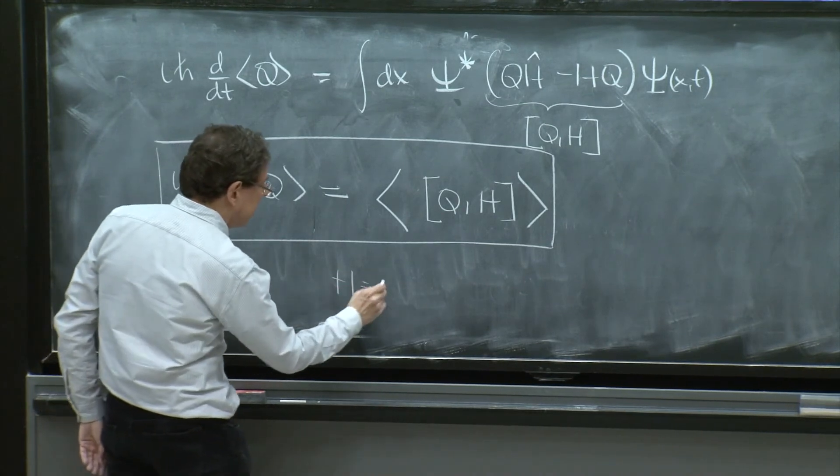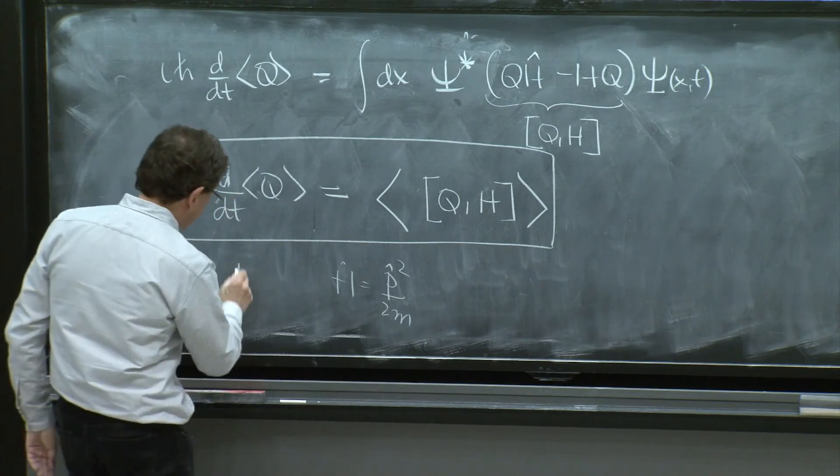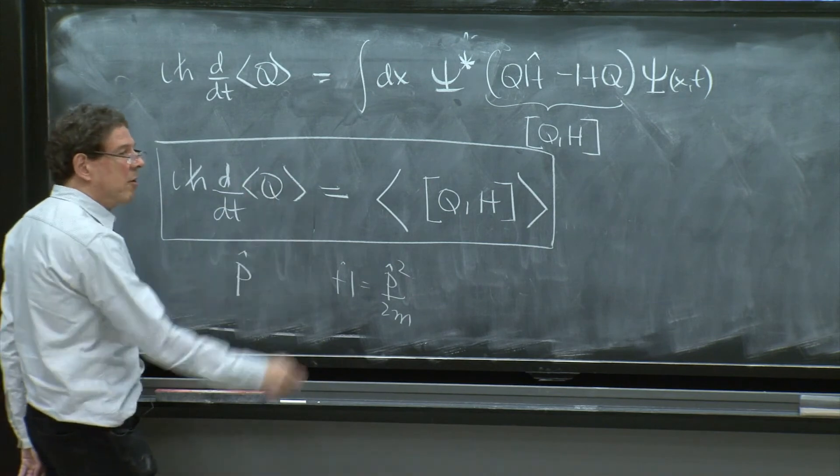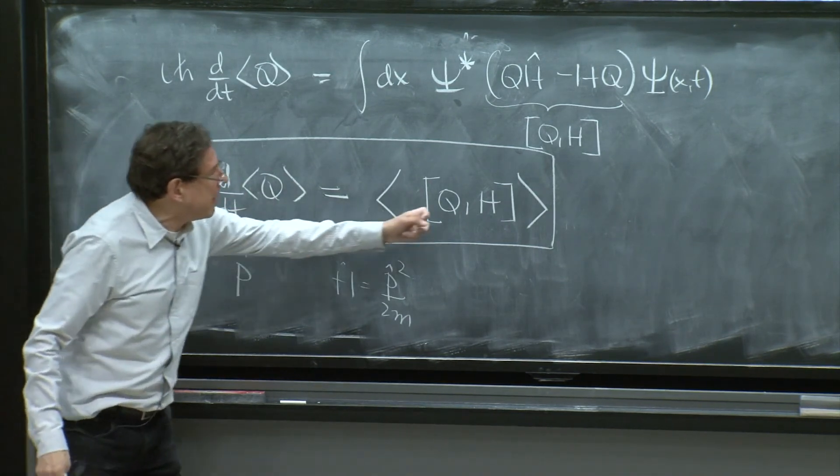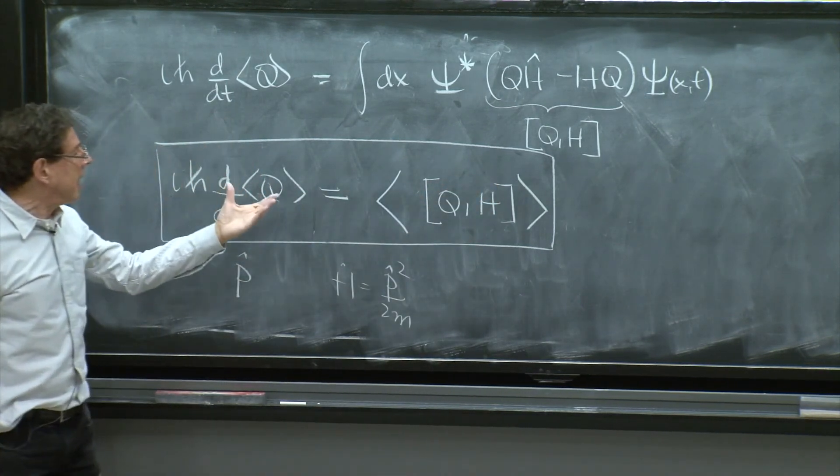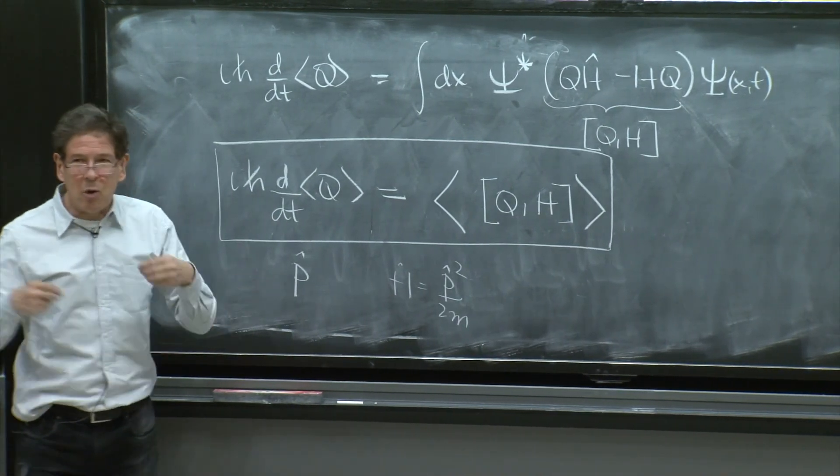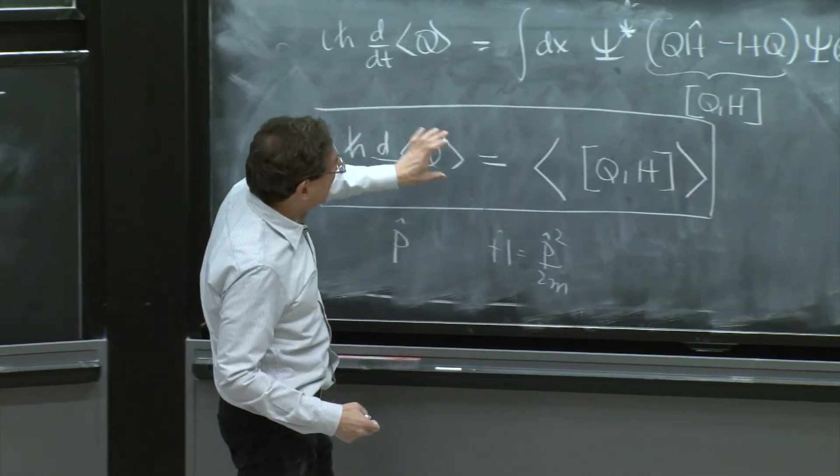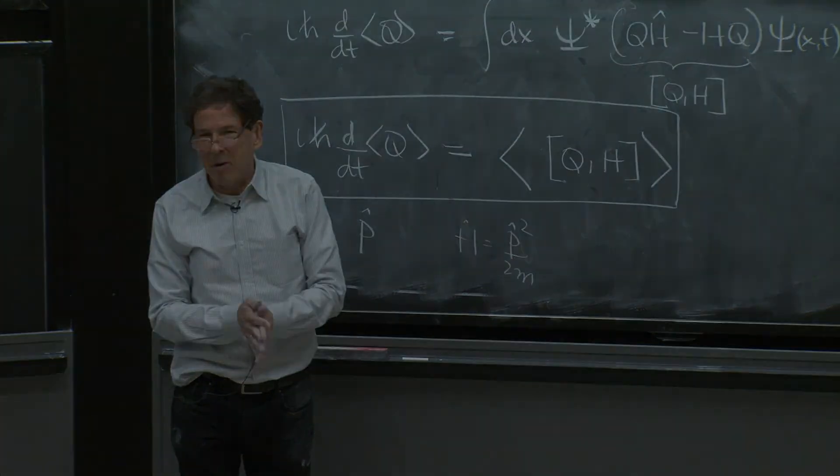If you have a Hamiltonian, say, of a free particle, well, the momentum commutes with this. Therefore, the expected value of the momentum, you already know, since the momentum commutes with h, this is zero, the expected value of this is zero, and the expected value of the momentum will not change, will be conserved. So conservation laws in quantum mechanics have to do with things that commute with a Hamiltonian. And it's an idea we're going to develop on and on.